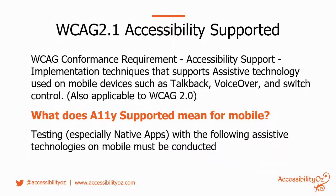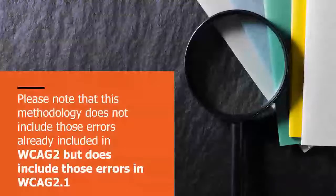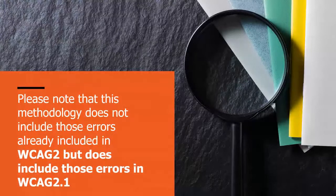Whether you have a responsive or mdot site doesn't matter — you need to have all the same functionality. You can hide content if necessary but you must have the same ability to do everything. The other important concept in WCAG 2, reinforced by 2.1, is accessibility supported. If there are accessibility techniques inherent in a device or technology — say PDF or HTML — you must use those accessibility features. For mobile, especially with native apps, you really need to do testing with assistive technologies, because there's no other way to determine whether those native apps are using the features inherent in the system.